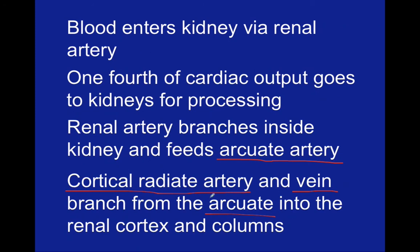One important fact about blood flow through the kidneys is that 25% of all of our body's cardiac output will go to the kidneys to be processed at any given time. If we remember from ANP1 that 20% of our blood goes up to the brain, that's almost half of all cardiac output going through the kidneys and the brain at any given time. Since the kidneys are the blood's filter, we need to pass a good amount of blood through there to make sure that no nitrogenous wastes are building up in our bloodstream.